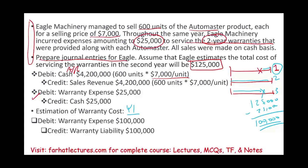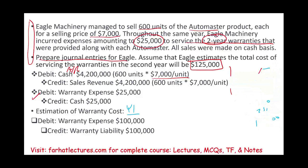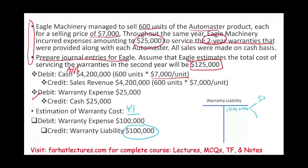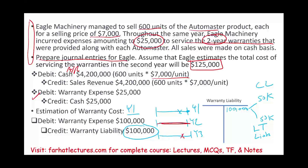Now, here's what else you need to know. You have a warranty liability of $100,000 that spans over two years — year two and year three. Therefore, of that $100,000 warranty liability, $50,000 will be a current liability and $50,000 will be a long-term liability. Because we're standing at the end of year one, year two falls within the next operating cycle (current), and year three is beyond that (non-current).